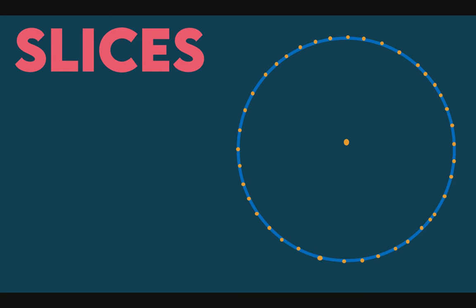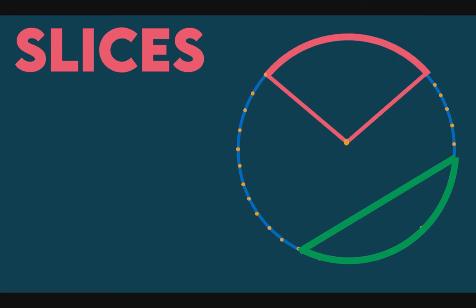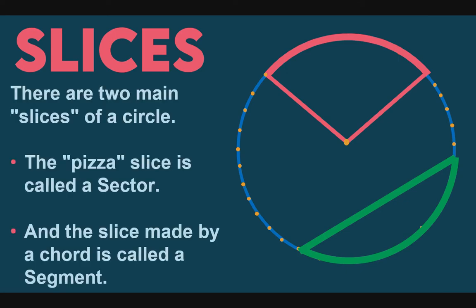Next, let's talk about slices — the different kinds of divisions of a circle. We have two types. The first type is the pizza slice, called the sector. The second is called the segment. Note that a line segment and a segment of a circle are different. When we say segment here, it is two-dimensional. So we have the sector and the segment as our two types.